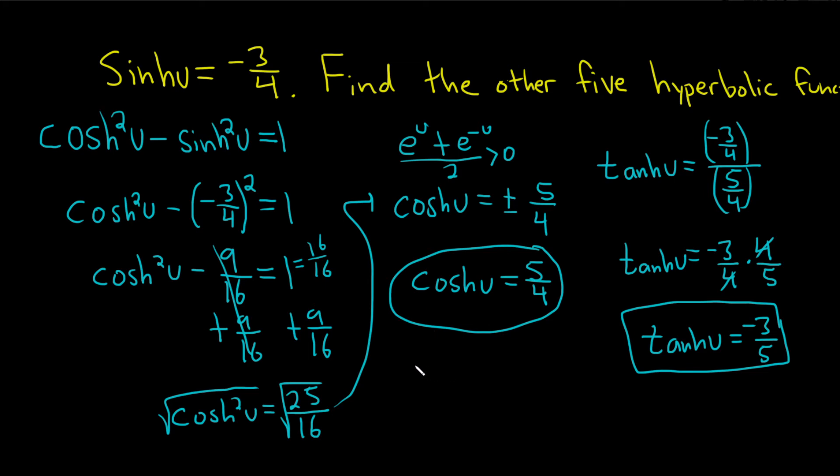Now we need the other ones. How about the hyperbolic secant of u? Well, that's 1 over the hyperbolic cosine of u. It's 1 over the 1 that starts with the other letter. That's how I memorize it. So it's 1 over 5/4, which is really 1 times the reciprocal, so 1 times 4/5, which is 4/5. So the hyperbolic secant of u is 4/5.